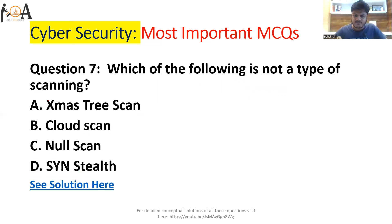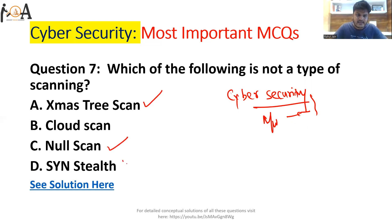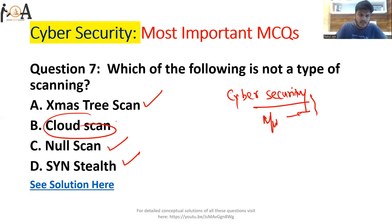Question number seven: which of the following is not a type of scanning? In cyber security and network security scanning, there are three types of scans: Xmas scan, Null scan, and SYN stealth scan. Cloud scan is not a type of scanning at all, so Option B is the correct answer.